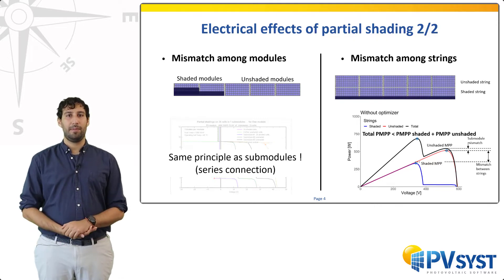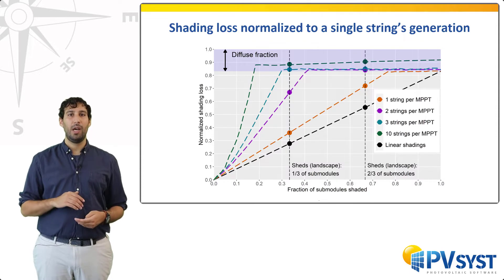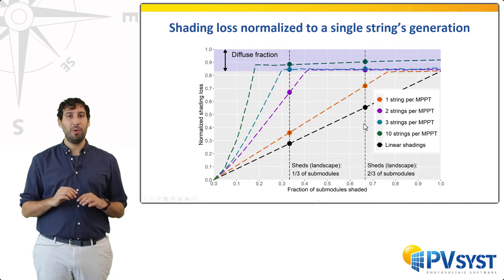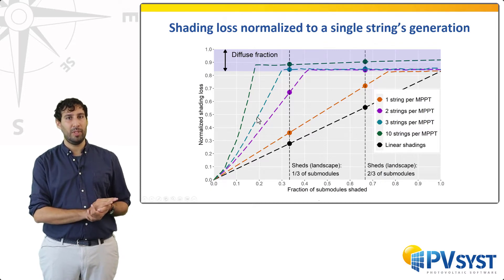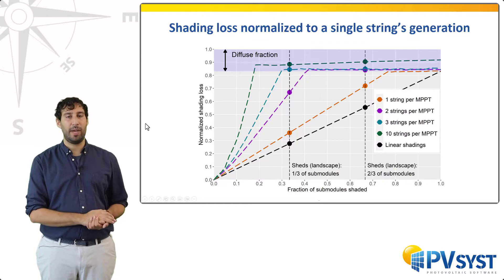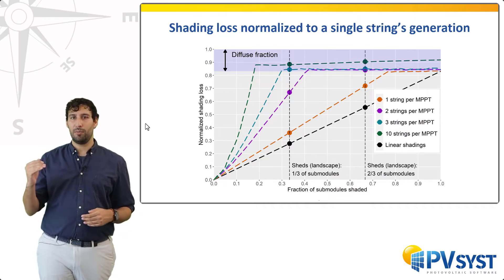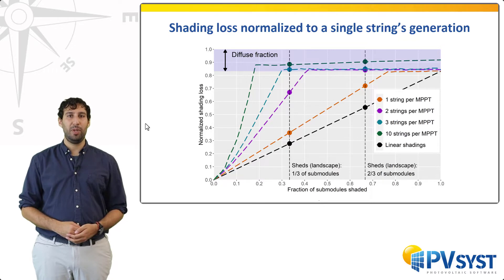This last situation can be generalized. In this plot, we study the shading losses normalized to the production of a single string as a function of the number of sub-modules being shaded. The inter-row shading situation corresponds to different points on the x-axis. In regular shadings on standard modules, one always shades one-third of all sub-modules at a time, hence the importance of the one-third line and the two-third line. A situation without mismatch corresponds to the black line. The orange line, where only one row of modules is connected to an MPPT, shows a few extra losses due to sub-module mismatch. The mismatch between strings will increase with the number of strings in parallel, and from two strings onwards one quickly reaches a plateau in the losses.